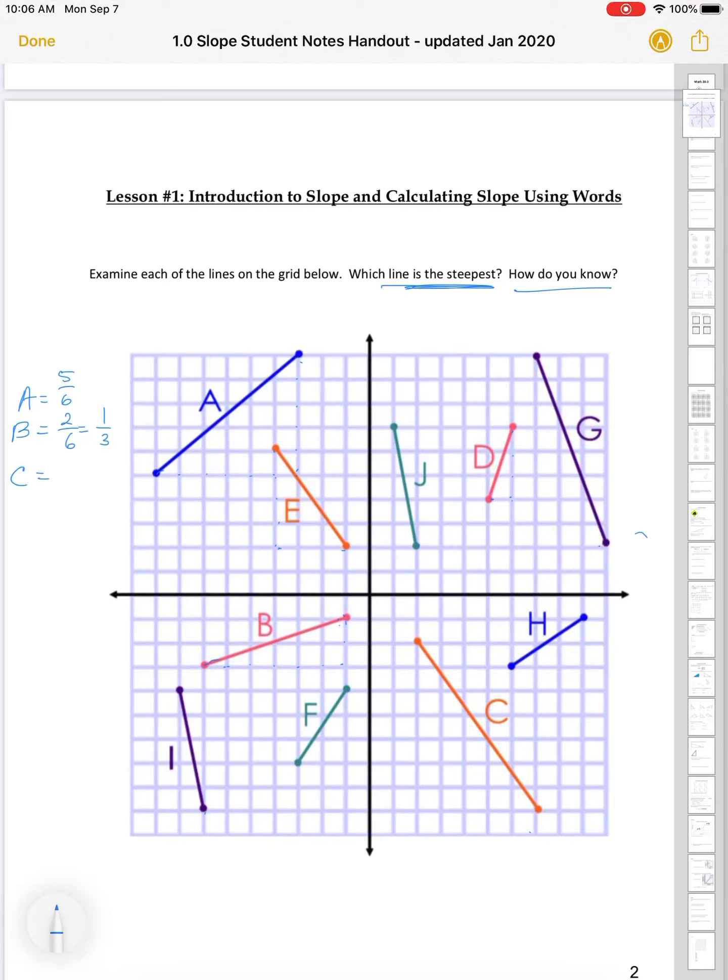C. C is going down, but still we can say that it is, we can still look at its steepness. So, it goes from 1, 2, 3, 4, 5, and it goes up 1, 2, 3, 4, 5, 6, 7. So, rise is 7 over 5, and we would say it's negative because it's going down.